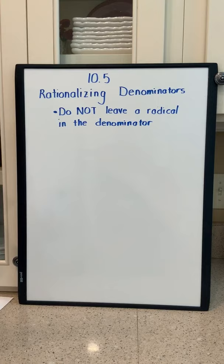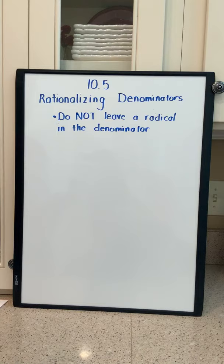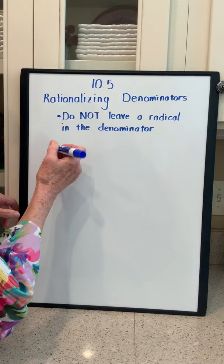This is section 10.5, and what we're going to talk about is rationalizing denominators. There's this huge rule in math that says that you cannot leave a radical in the denominator. So I'm going to go over a couple things that are going to make our process easier when we get to some more difficult problems. I want to review something.